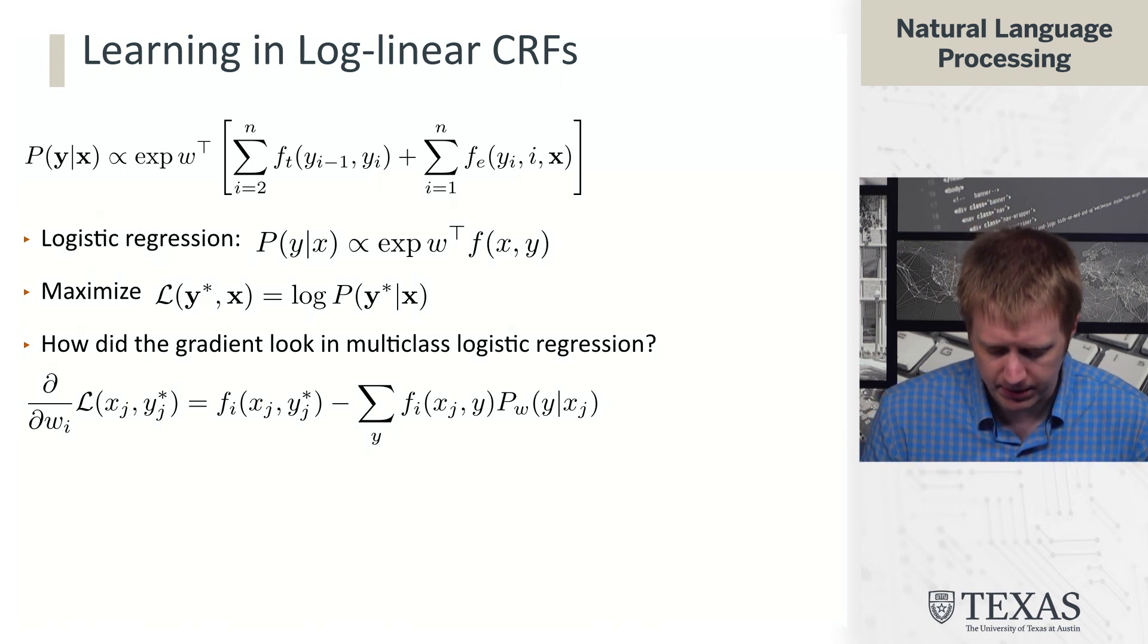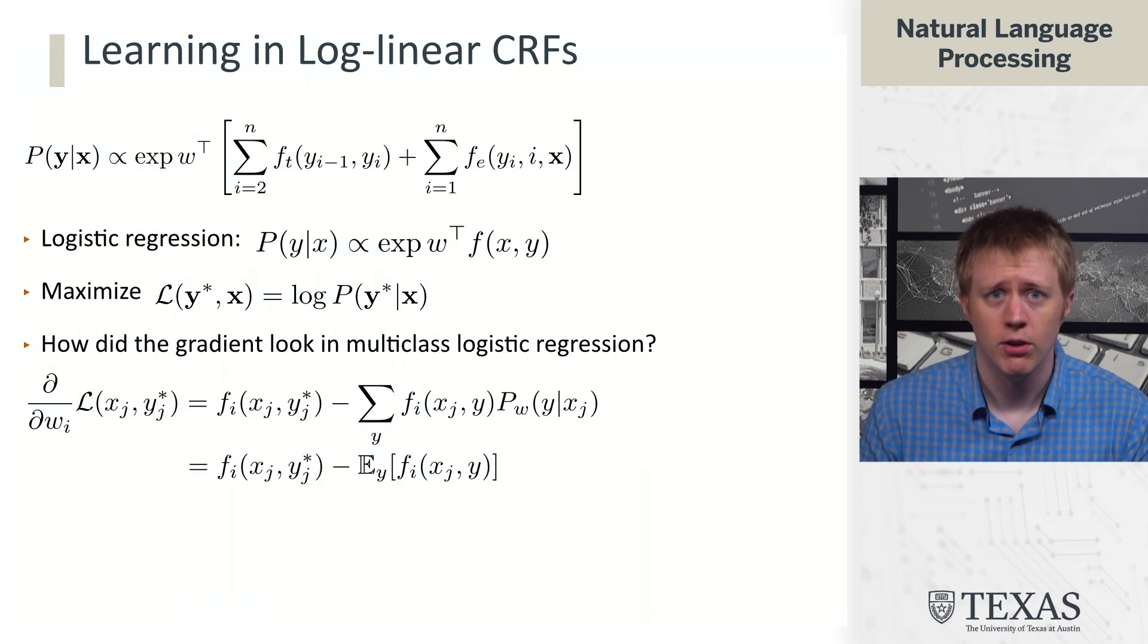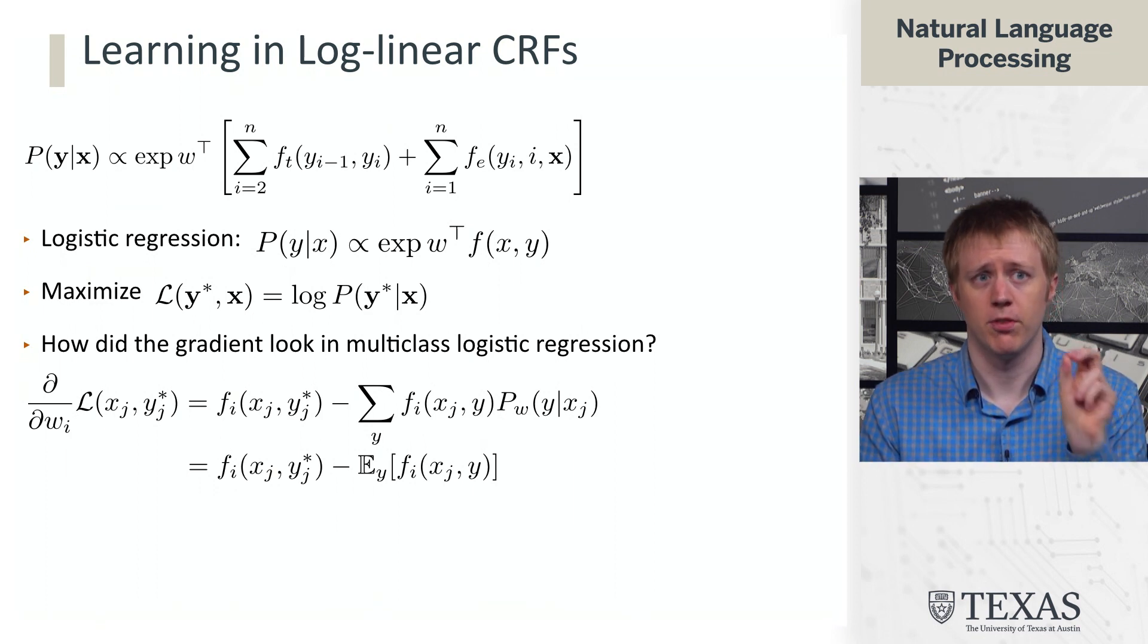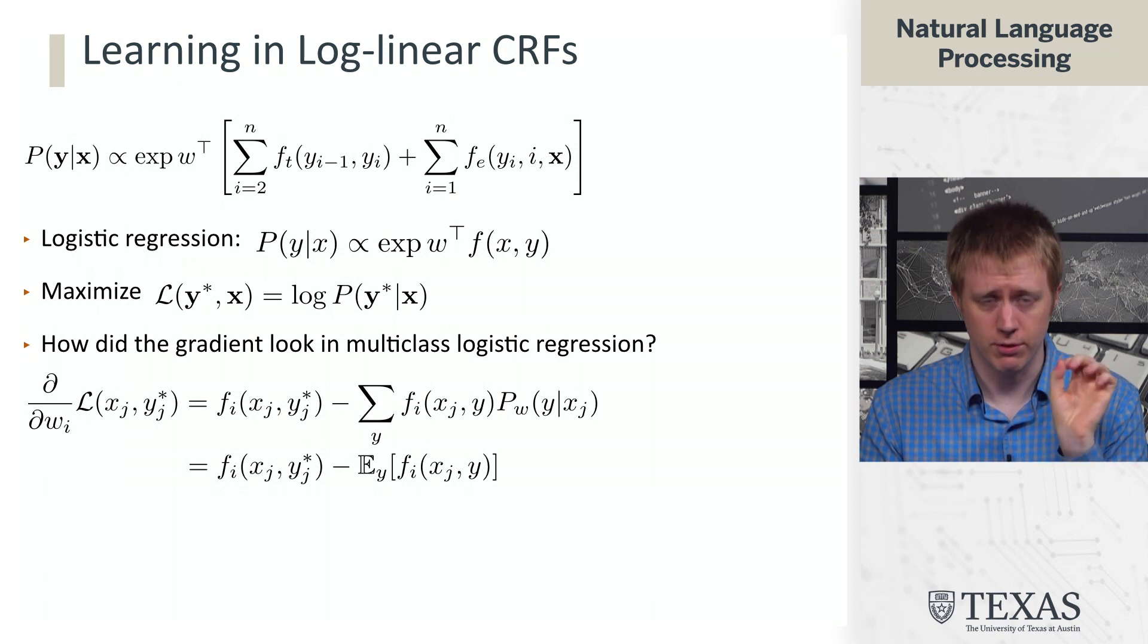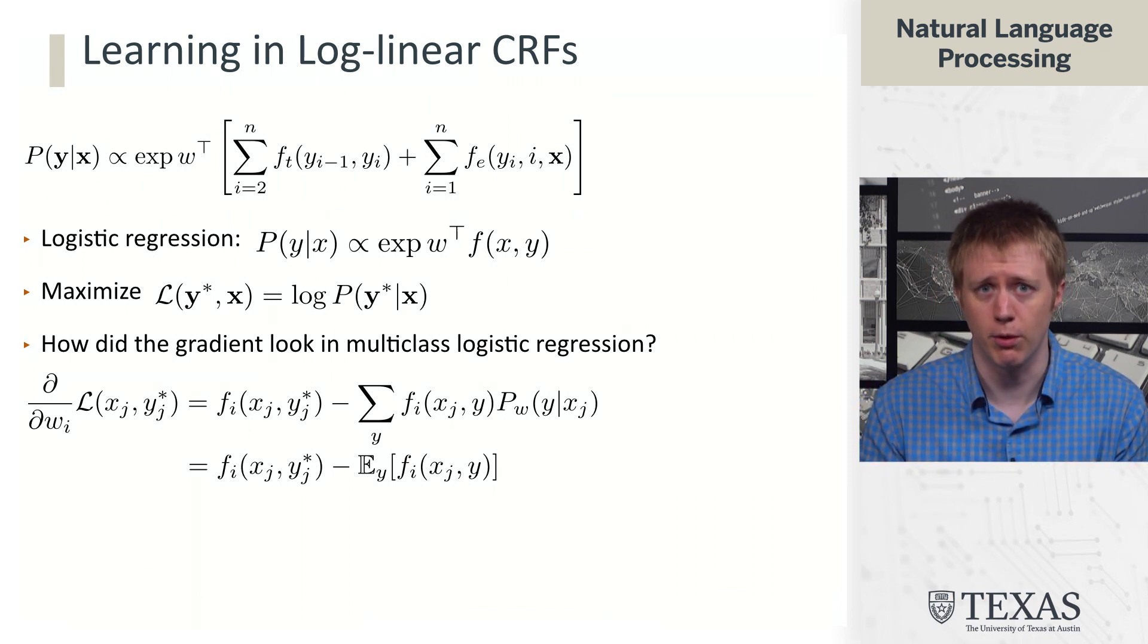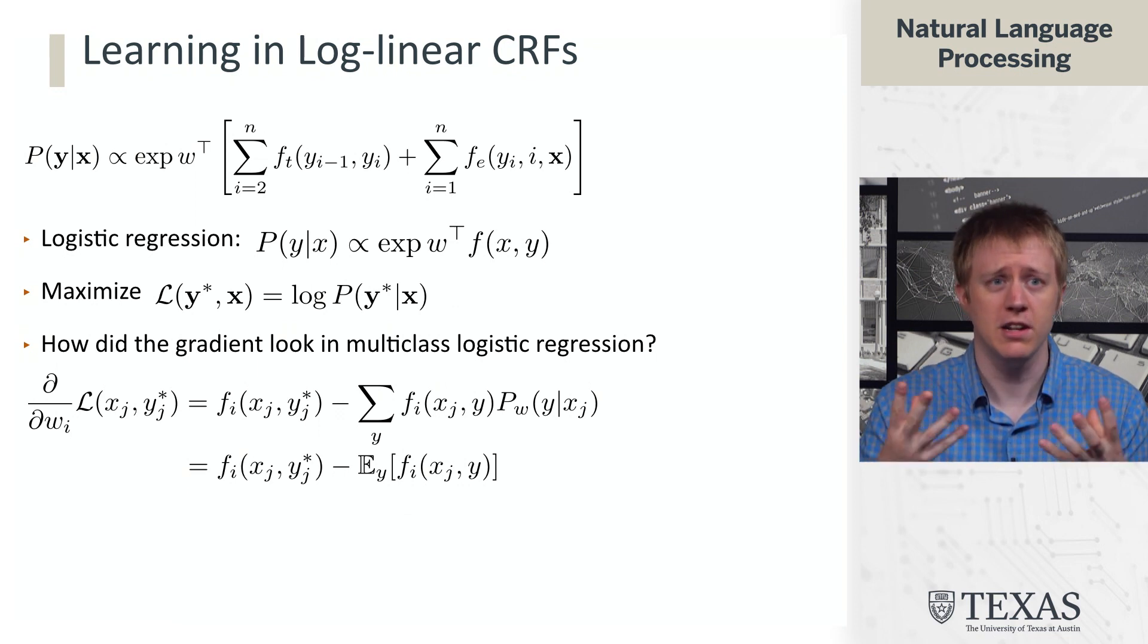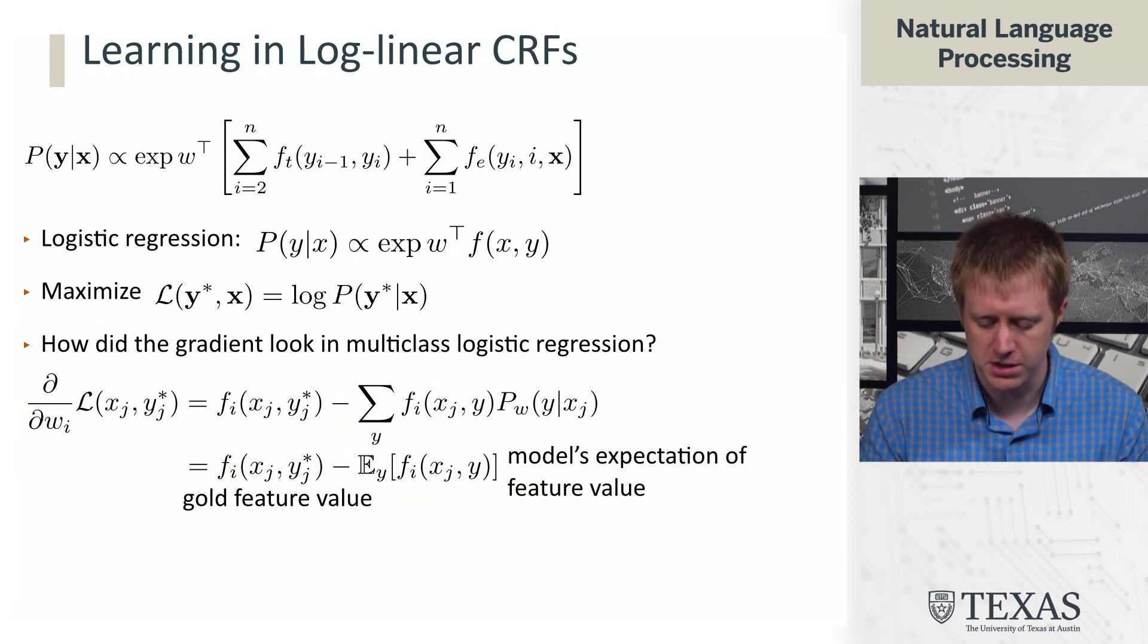So what we saw before was something like this. And I'm going to write it in two ways. So looking at the top here, the gradient with respect to a particular weight looks like the value of that feature associated with the gold label. So in the different features standpoint, it's what is the value of that feature when the gold label is kind of what we're focusing on. And then we subtract off a sum over Y times the feature value associated with that Y times the model's probability that it placed on Y. So we have this gold feature value minus the model's expectation of the feature value.